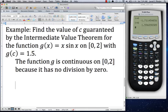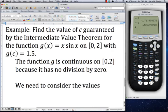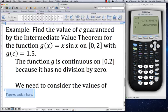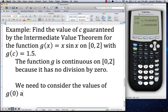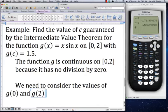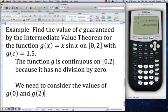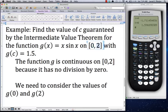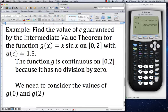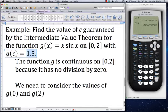My next step is I need to look and we consider the values of g(0) and g(2). The whole idea is that we're plugging in the endpoints, plugging in 0 and 2, and we're making sure that 1.5 is going to be in between those things.